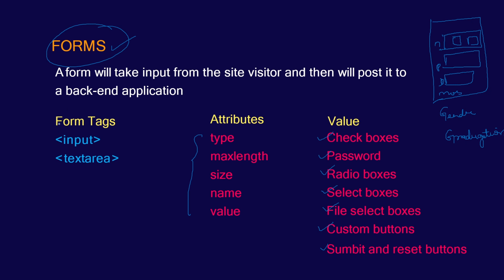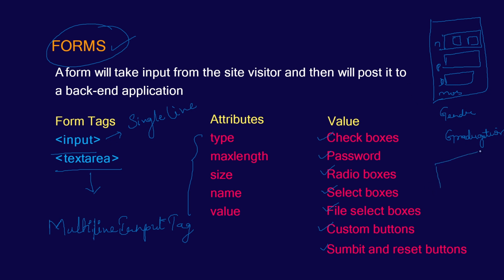The main two tags in a form are the input tag and the textarea tag. The input tag is called a single-line input tag, whereas the textarea is called a multi-line input tag. In some forms, at the end there will be a box labeled 'comment,' or if you are submitting a complaint, there will be a box asking you to describe your problem in brief. To add these kinds of boxes, we use a textarea, which supports multiple line inputs.